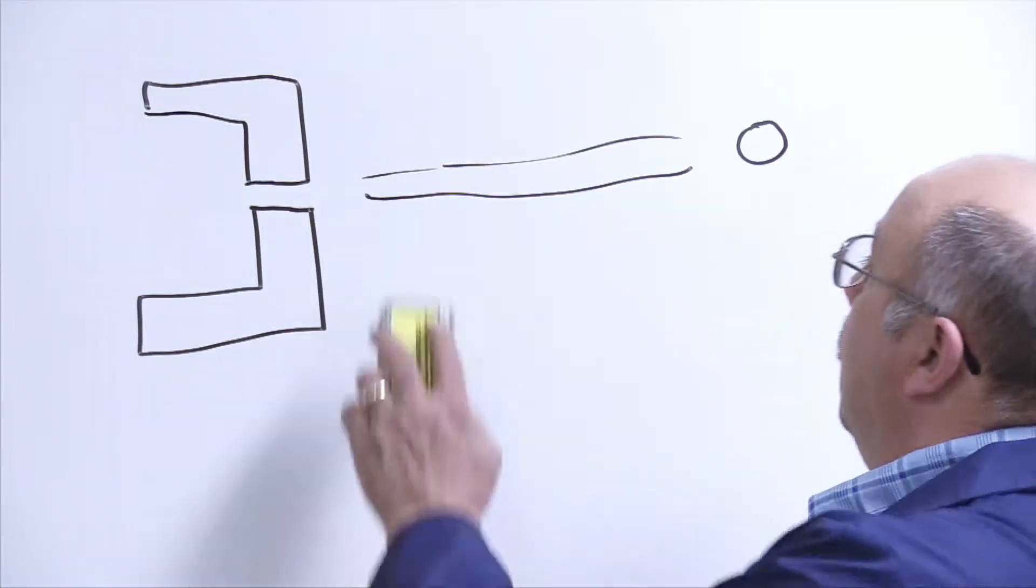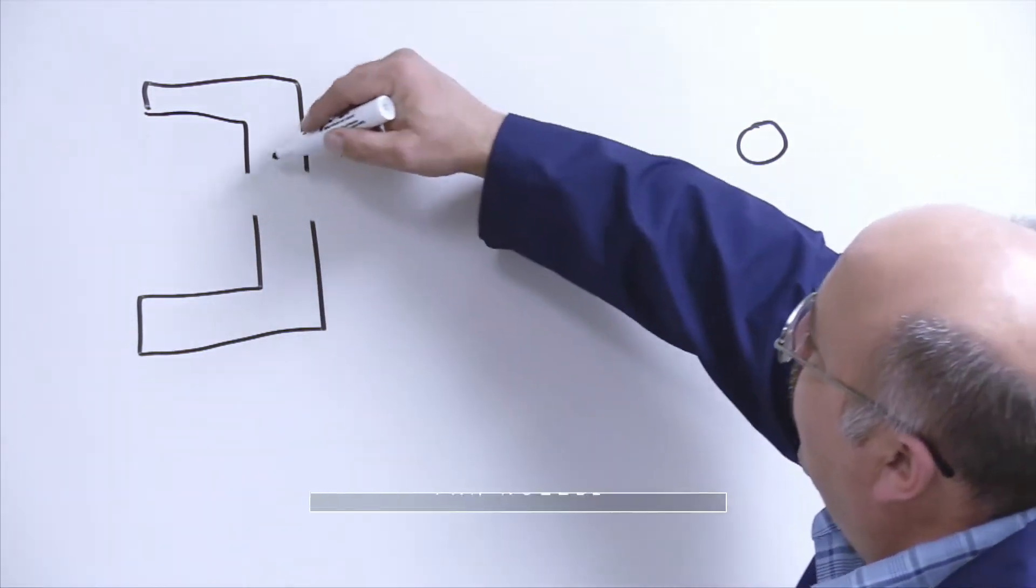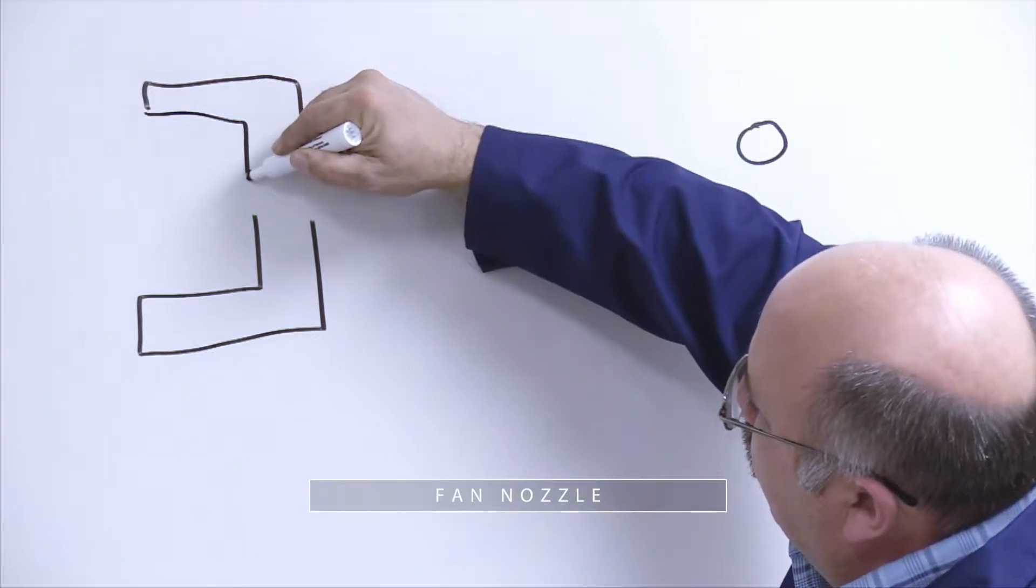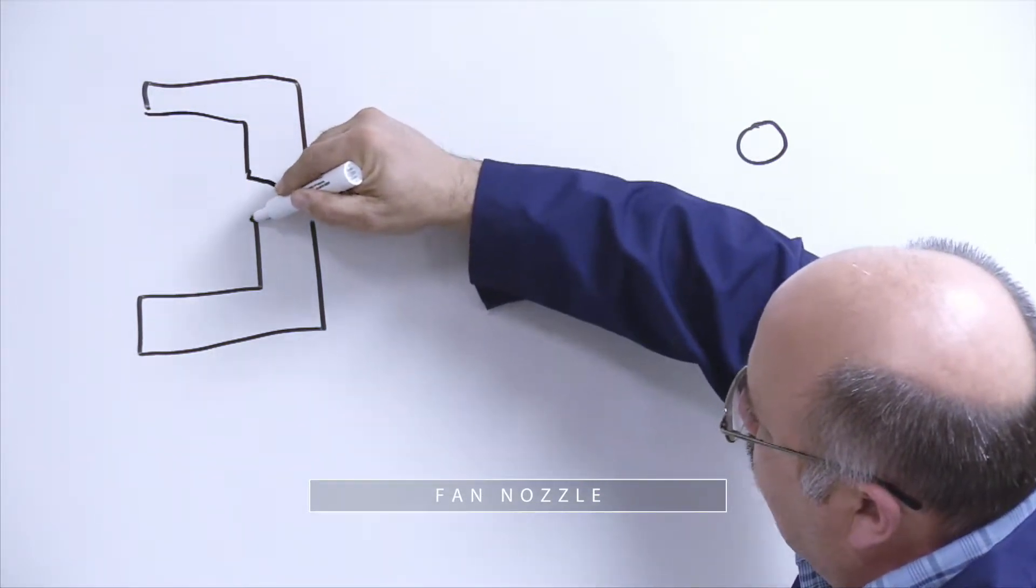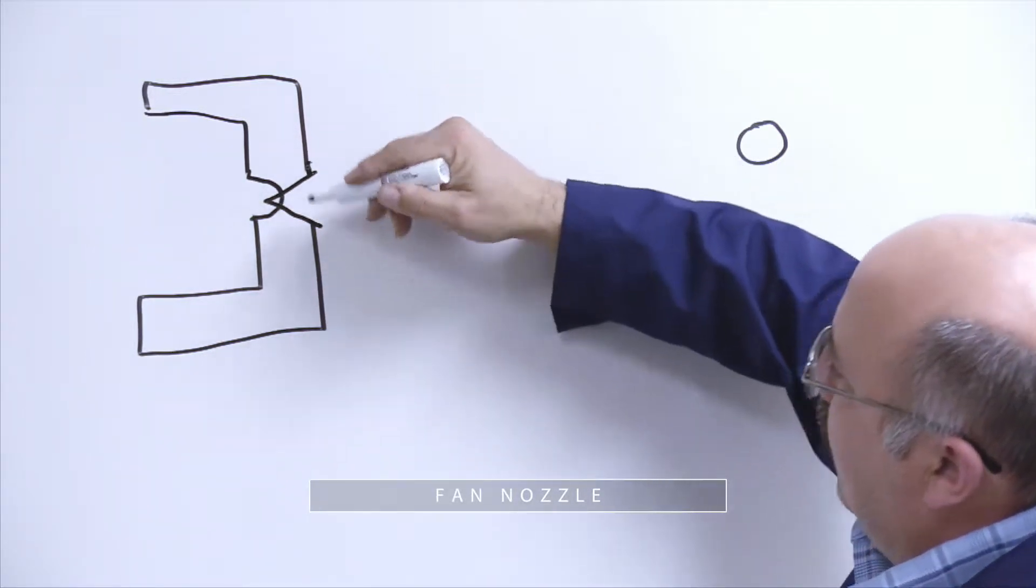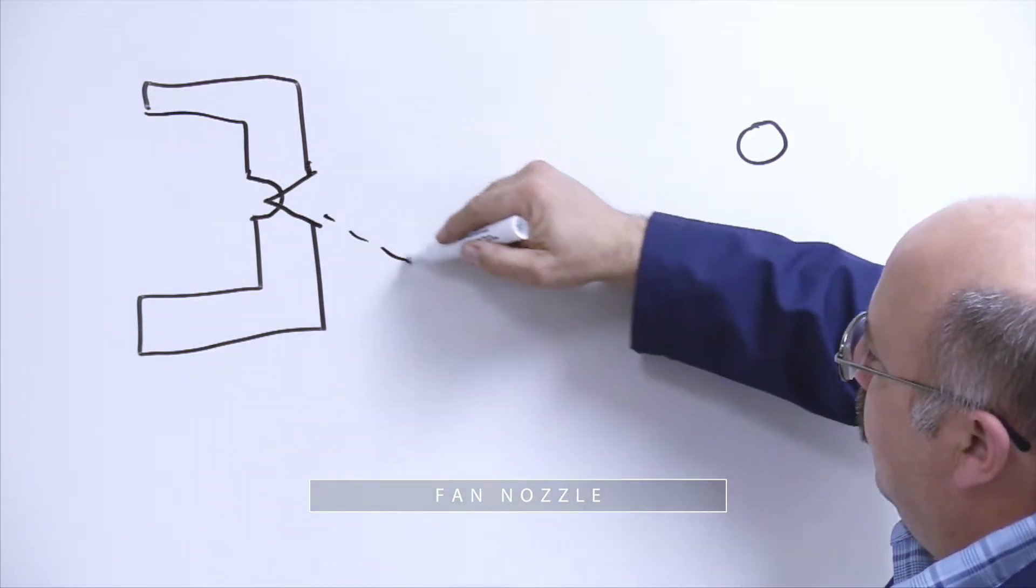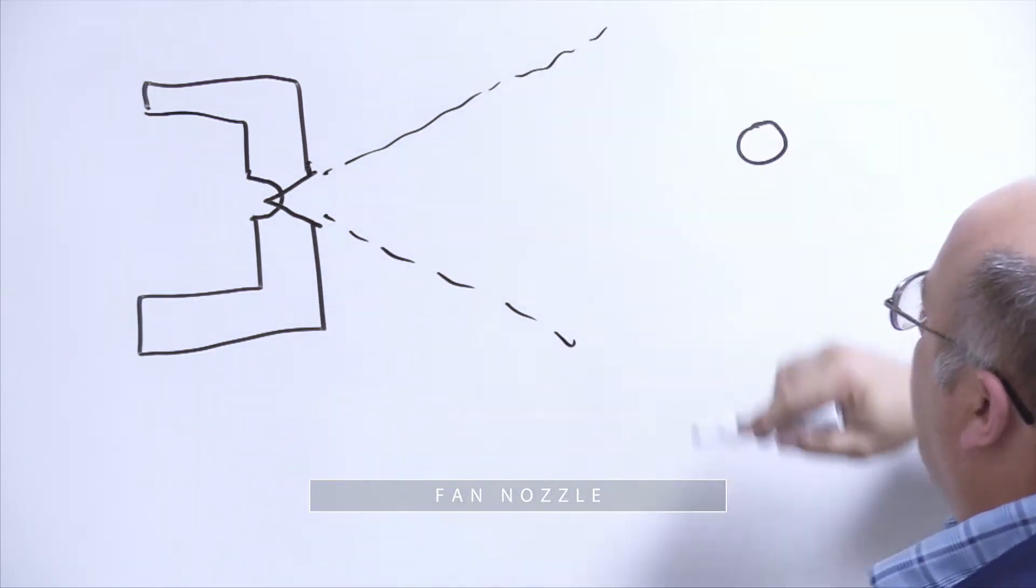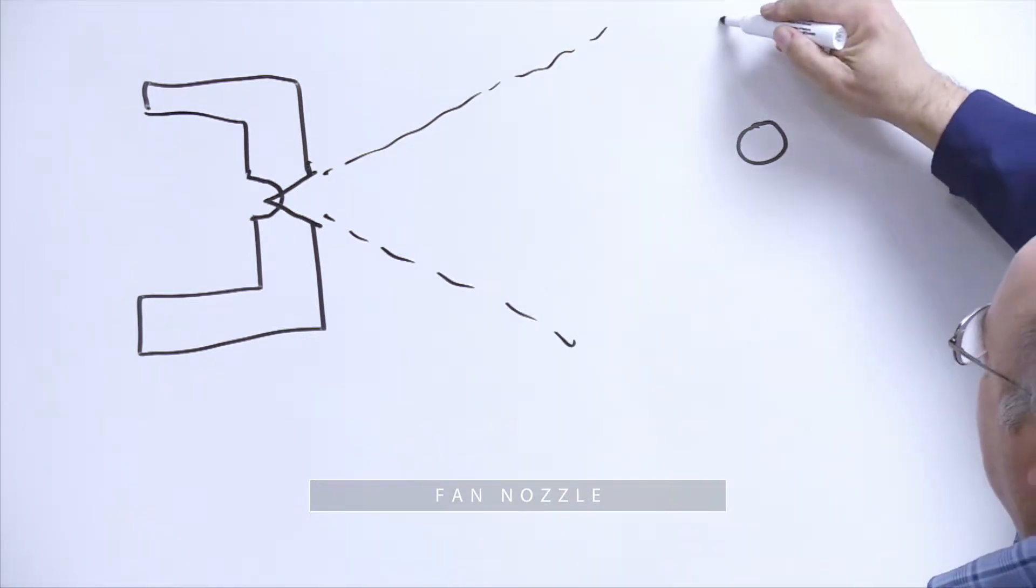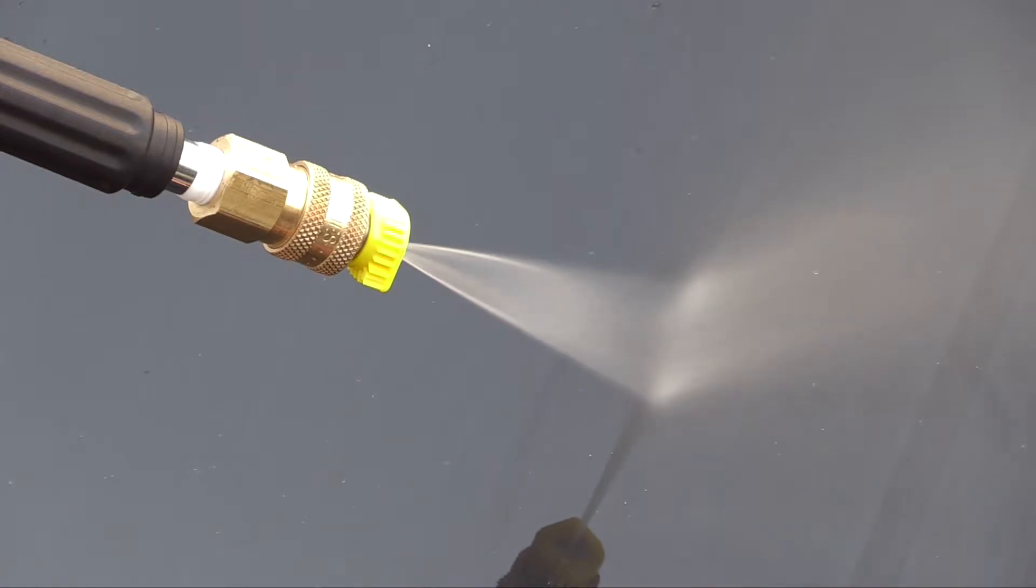The next nozzle is the fan or cone nozzle. When they machine that, it's a lot harder because you have to put a spherical shape into it, then cut a V-notch that intersects. After they intersect, there's a shape that creates the spray coming out at an angle. When it hits the impact surface, it's shaped like that. This type of nozzle is really good for sweeping or cleaning a surface.